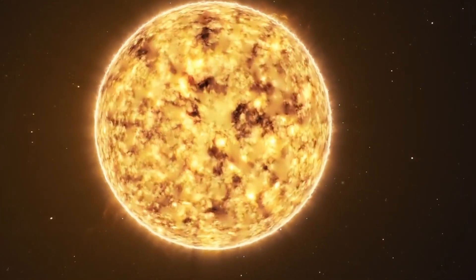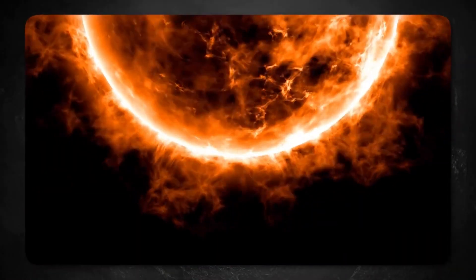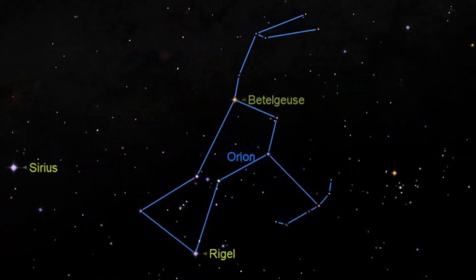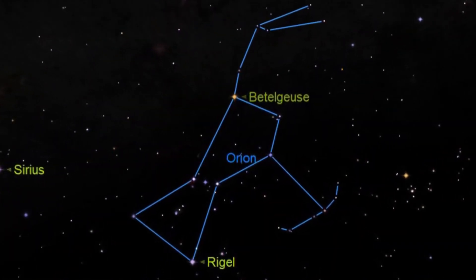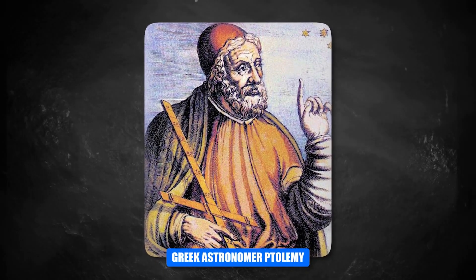Mu Cephei is one of the brightest stars that can be seen with the human eye and is famous for how bright it is. Based on their pulsations, color changes, and general traits, these stars are getting close to the end of their lives.